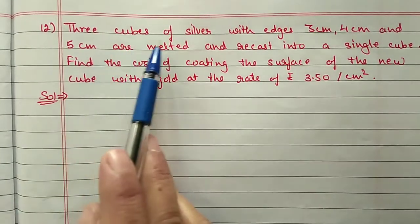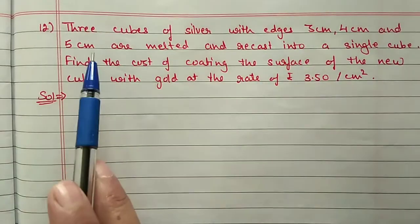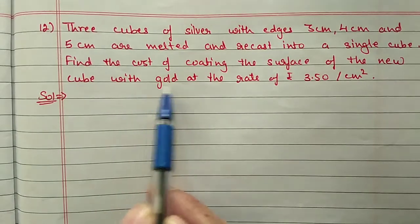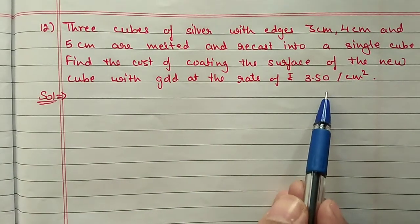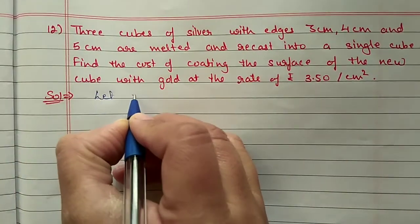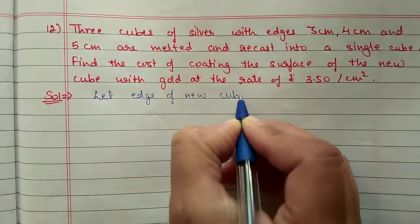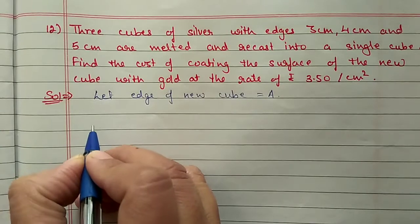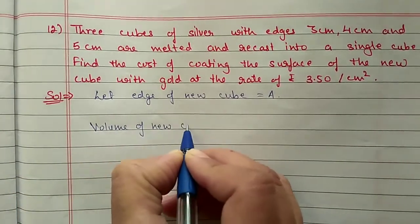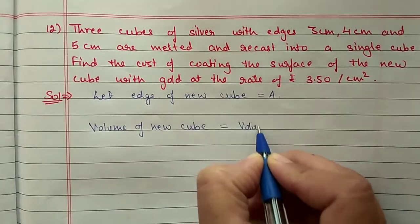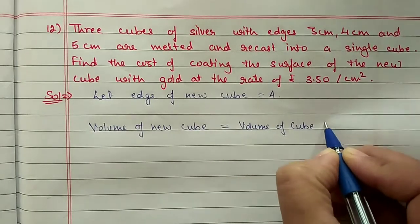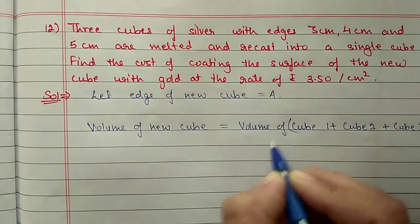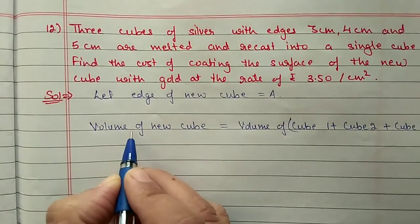Next, question number 12. Three cubes of silver with edges 3 cm, 4 cm, and 5 cm are melted and recast into a single cube. Find the cost of coating the surface of the new cube with gold at the rate of 3 rupees 50 paise per cm². Let the edge of the new cube be a. When recasting, volume remains the same, so volume of new cube equals volume of cube 1 plus cube 2 plus cube 3.